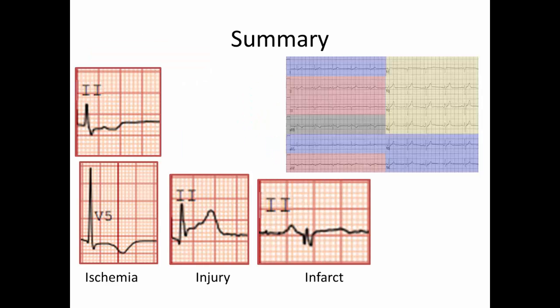In summary, today we talked about ischemia, ST depressions or T wave inversions, injury ST elevations, and infarct Q waves. Remember that when you're looking for these changes, think about your myocardial distributions that correlate to the coronary arteries. Thank you for your time and have fun interpreting your ECG.